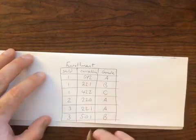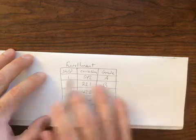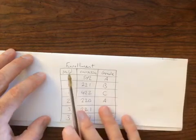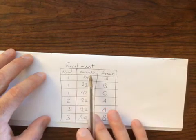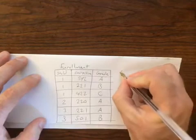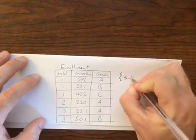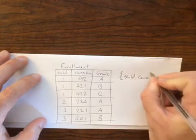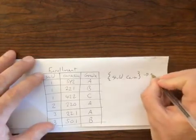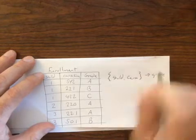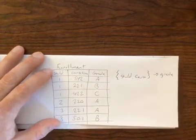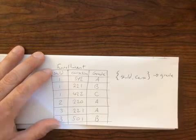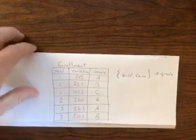Remember, with our functional dependencies, if we were to draw this out for functional dependencies, we would say that the key here is the combination of the student ID and the course number, right? So our closure would be student ID and course number. And we would say that the grade is functionally dependent on these things. So we could create a functional dependency for our current enrollment table that looks something like this. And this would be correct, and also in third normal form.